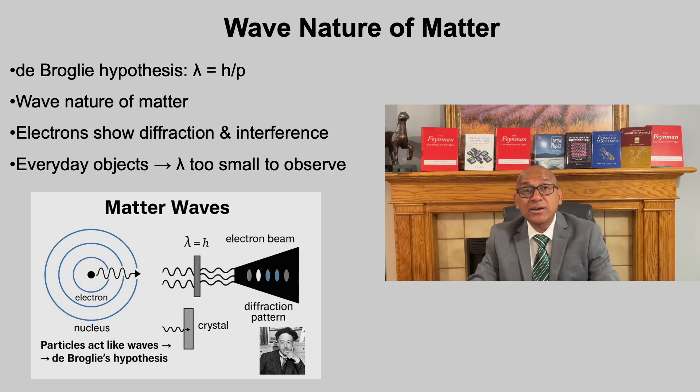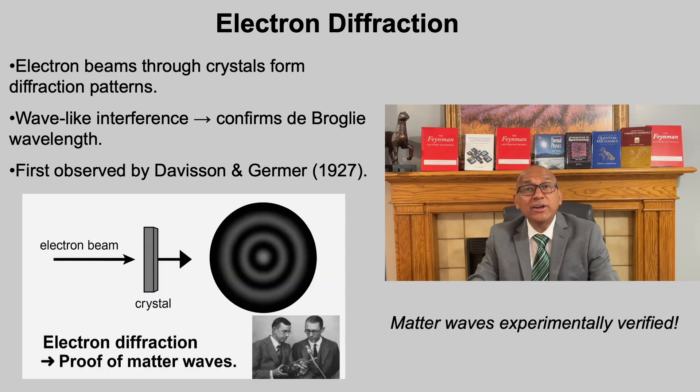This idea explained Bohr's quantized orbits naturally. Electrons can only exist in orbits where their matter waves fit around the nucleus like a standing wave. De Broglie's hypothesis was bold. But could matter waves actually be observed?